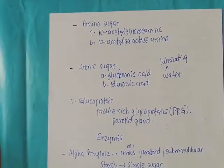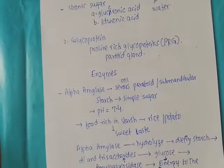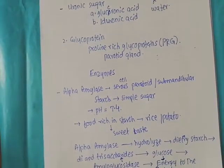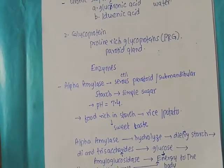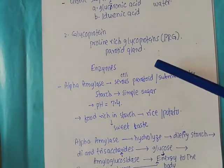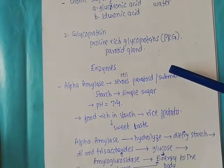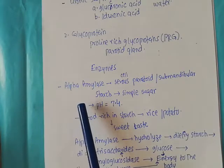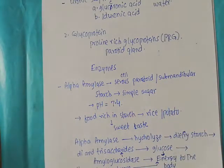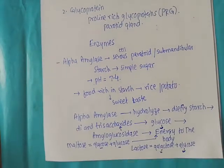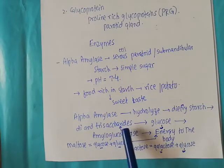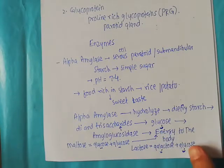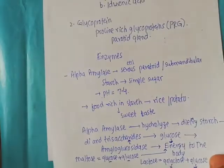Welcome back to this next video. In this video we are going to talk about the antimicrobial enzymes and some other proteins present in the saliva. In the last video, one important enzyme was alpha amylase, produced by the serous cells of the parotid and submandibular glands. Its function was to hydrolyze dietary starches into di- and trisaccharides, which are then converted by amyloglucosidase into glucose, which can be utilized by the body for energy production.